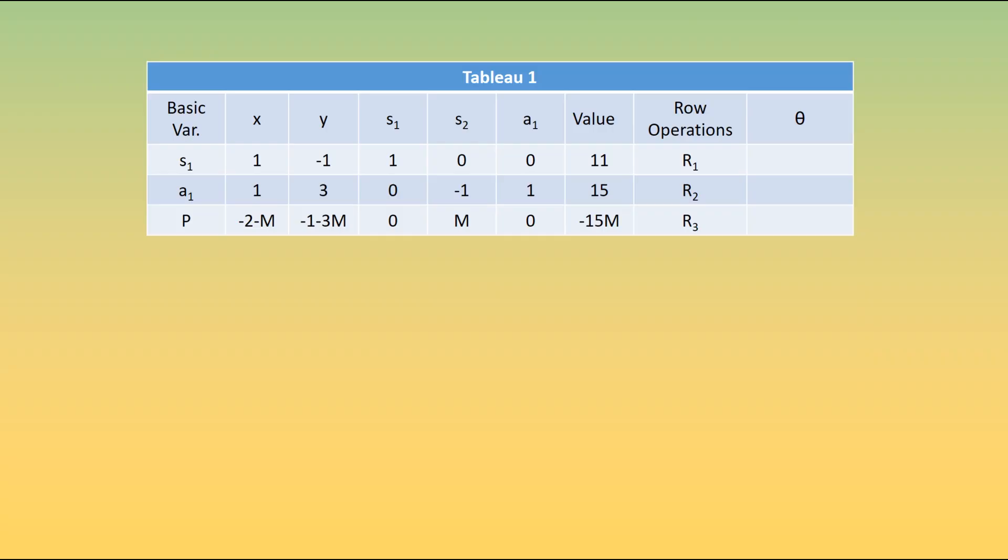Now in working with this, the first stage is always to identify the pivot column. Looking along the P row at each of the values that are in there, we see several with an M in it. This is when it can be quite useful to think of it as representing a million, for example. So in the x column, we have minus 2 minus a million. Then in the y column, minus 1 minus 3 million. The s2 has positive a million. Then we have minus 15 million, or minus 15M really, in the value column. But we don't look at that one, we're looking at the variables. So the largest negative number would be the minus 1 minus 3M in the y column. This one is the largest negative value. We then follow the standard simplex method, and we calculate our values of theta, and we identify the smallest positive value there. So 3 is our pivot.